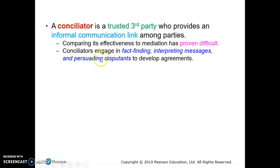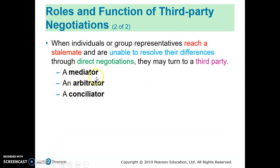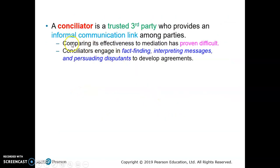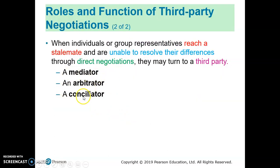The conciliator is the third type of third party. It is a trusted third party who provides an informal communication link among the parties. Comparing the effectiveness of conciliators with mediators, it appears that arbitration is the most effective in resolving conflicts, and mediators are better than conciliators in terms of effectiveness.